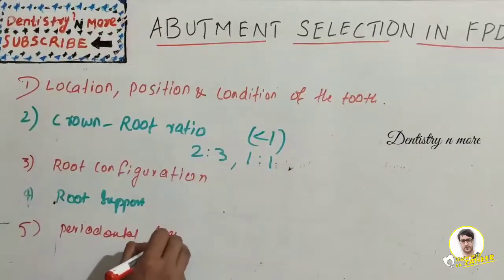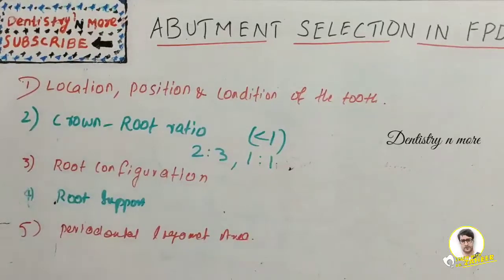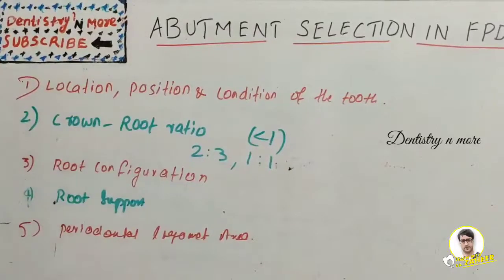Next we have the periodontal ligament area. It can be used as a measure to determine the potency of the abutment. There is something known as Ante's law.